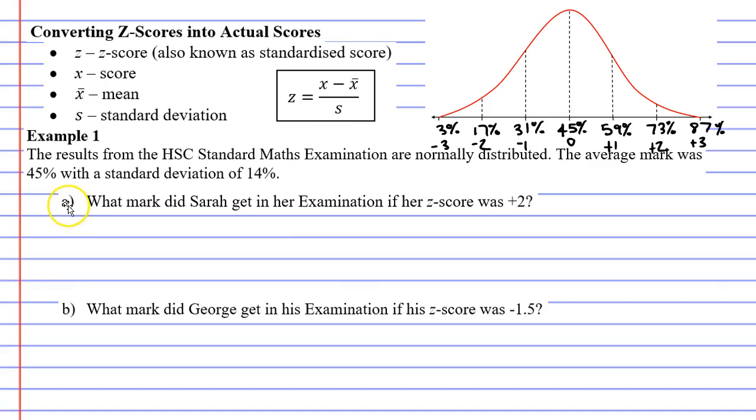Let's look at question A. It says what mark did Sarah get in her examination if her z-score was positive 2? We can see that a z-score of positive 2 lines up with a mark of 73%. So her mark is 73%.